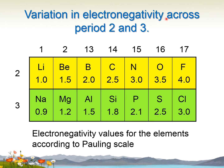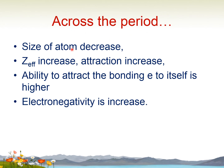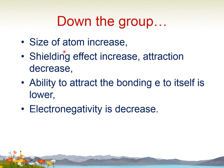Looking at the variation in electronegativity across period 2 and period 3, it is increasing across both periods. Across the period, when the size of atom decreases, Z increases, and nucleus attraction also increases, so the ability to attract bonding electrons to itself is higher, meaning electronegativity increases. Going down the group, the size of atom increases, shielding effect also increases, meaning nucleus attraction will be weaker, so the ability to attract bonding electrons is lower and electronegativity decreases.